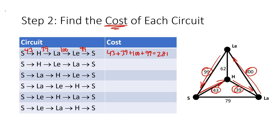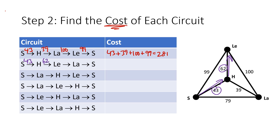For the second circuit: Shippensburg to Harrisburg is again 43, Harrisburg to Lewisburg is 62, Lewisburg to Lancaster is 100, and Lancaster back to Shippensburg is 79. Adding 43 plus 62 plus 100 plus 79 gives 284. I just do that same process for all of the circuits.